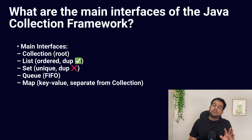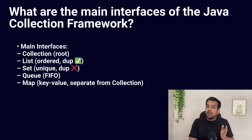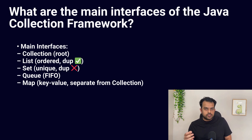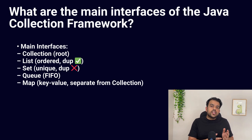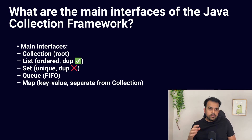List is used when you want an ordered collection and you are okay with duplicate values. Set is used when you want only unique elements with no duplicates. Queue is used when you want elements processed in a specific order, usually FIFO — first in first out — like a task queue. Map is slightly different: it does not extend Collection. Map stores key-value pairs where keys are unique and each key maps to exactly one value. In your answer, clearly say Collection is the root, then List, Set, and Queue come from it, and Map is separate for key-value pairs.